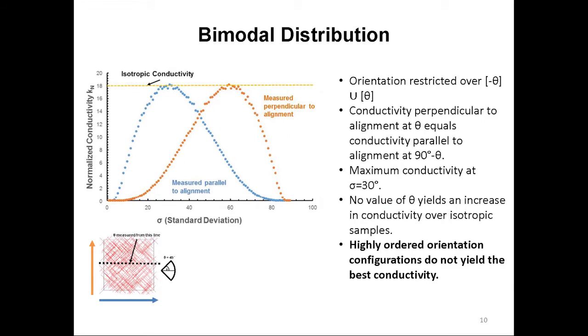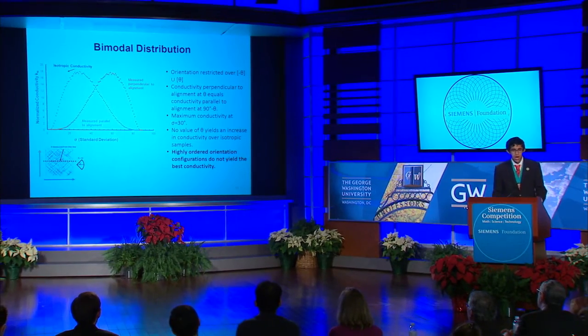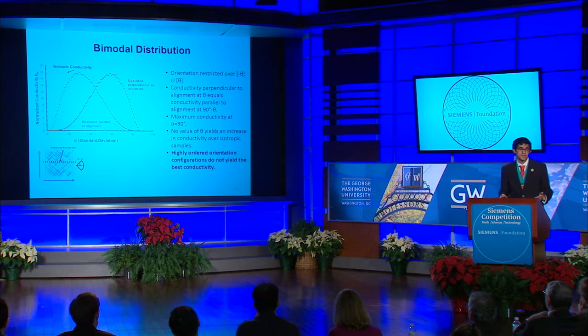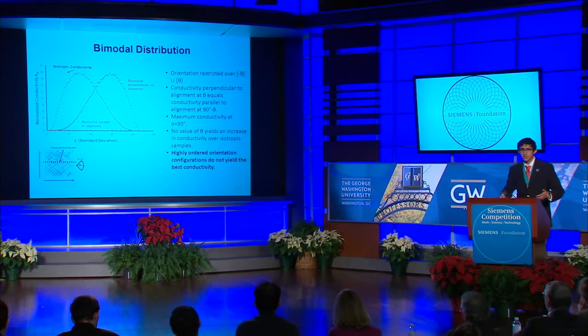These are the results for the bimodal distribution in which orientation is restricted over the range minus theta union theta. Normalized conductivity is again shown as a function of standard deviation sigma, with data in blue representing conductivity parallel to alignment and data in orange representing conductivity perpendicular to alignment. Important to note is that conductivity perpendicular to alignment at any value theta is geometrically equivalent to conductivity parallel to alignment at 90 degrees minus theta, which is why these two lines are reflections of each other over the line theta equals 45 degrees. The maximum conductivity perpendicular to alignment occurs at sigma equals 30 degrees; however, this value is exactly equal to isotropic conductivity. In fact, no point along this curve is any higher than isotropic conductivity. This yields a surprising result that a more ordered discrete configuration is not superior to the continuous, more random configurations previously described. In other words, the randomness and continuity of the previous configurations played an important role in determining their properties — something I did not expect.